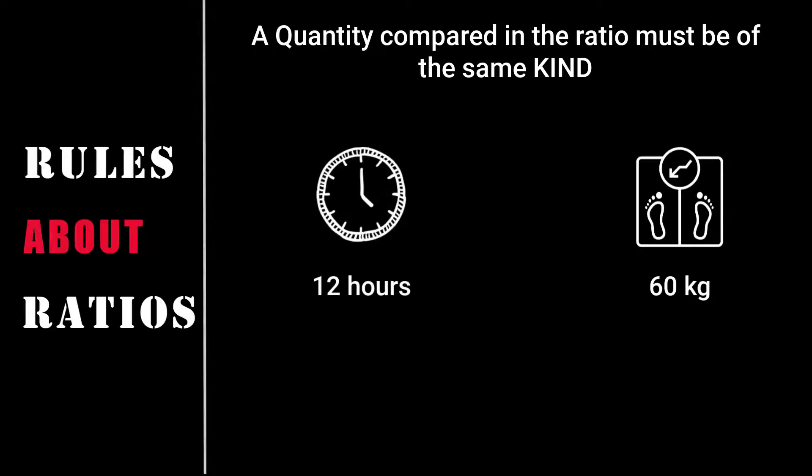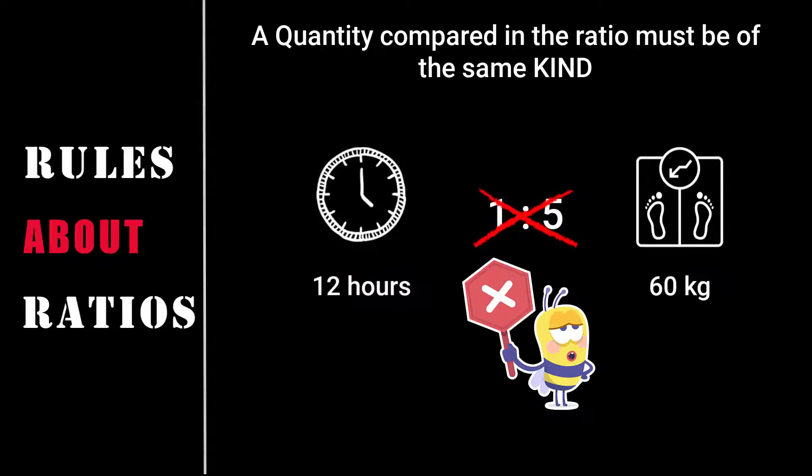We have time and weight. They are two different quantities. Time is a different quantity and weight is a different quantity. So can it be compared? No. Because the rule says that quantity compared in the ratio must be of the same kind. Let us move on to the next example.